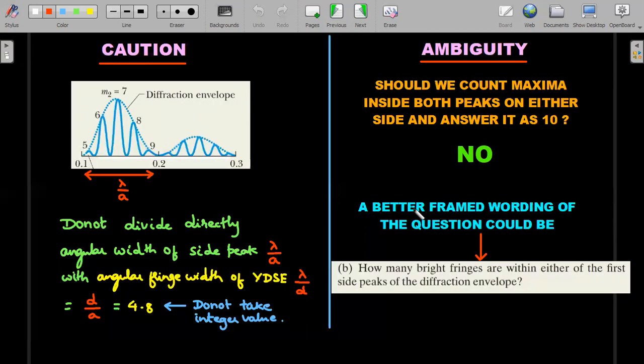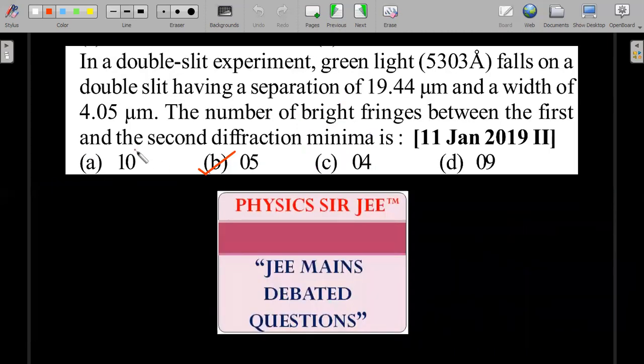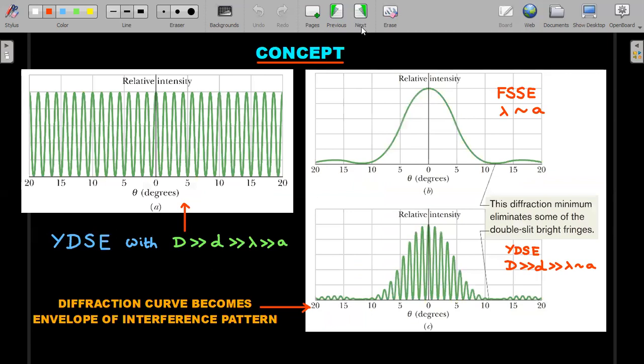So the better framed wording that I picked from the Resnick and Halliday solved example—you can go and check the section there—is: how many bright fringes are within either of the first side peaks of the diffraction envelope? Maybe NTA can take a cue from this in a future JEE Mains exam. They are very clear in this language because you could see some of the students actually went for 10. So if you are not careful, you may mark 4, which is wrong answer. And if the language is ambiguous, you could actually mark in a double of 5 and put a 10. So the most commonly answered wrong keys are 10 and 4, which you should be very careful in the future.